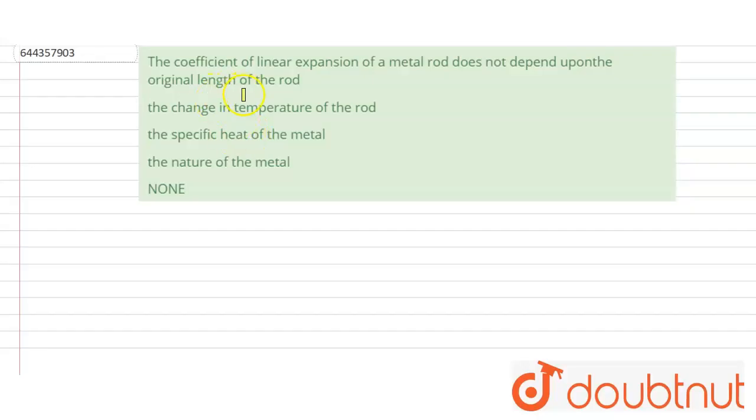Hello everyone, let's start the question. The question is: the coefficient of the linear expansion of a metal rod does not depend upon the original length of the rod.